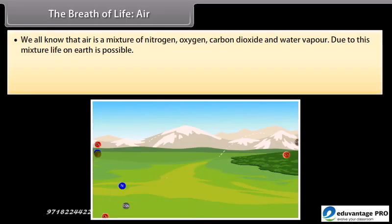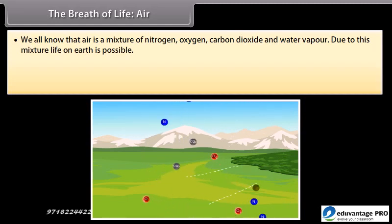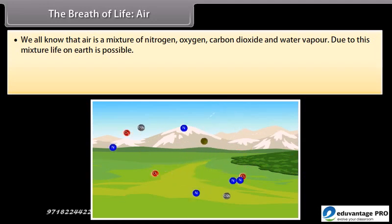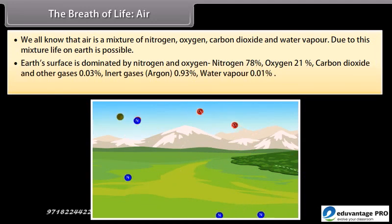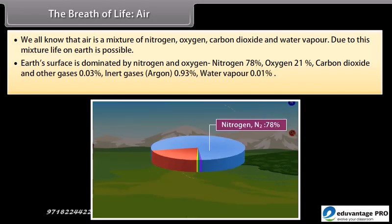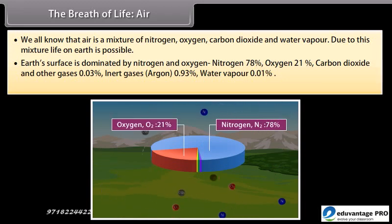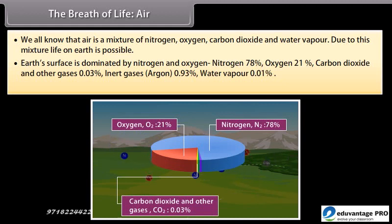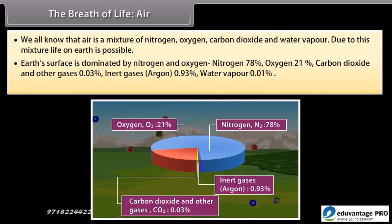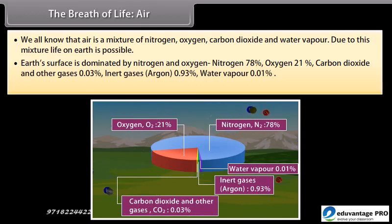Air is a mixture of nitrogen, oxygen, carbon dioxide and water vapor. Due to this mixture, life on Earth is possible. Earth's surface atmosphere is dominated by nitrogen at 78%, oxygen at 21%, carbon dioxide and other gases at 0.03%, inert gases such as argon at 0.93%, and water vapor at 0.01%.